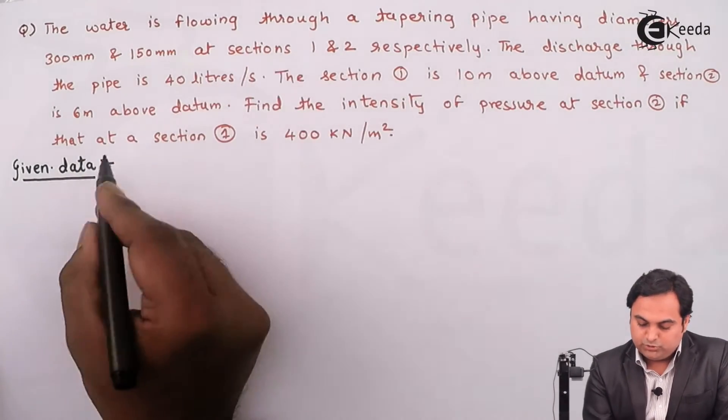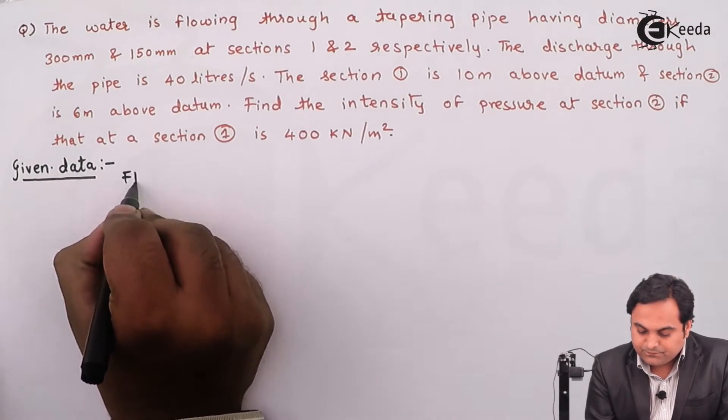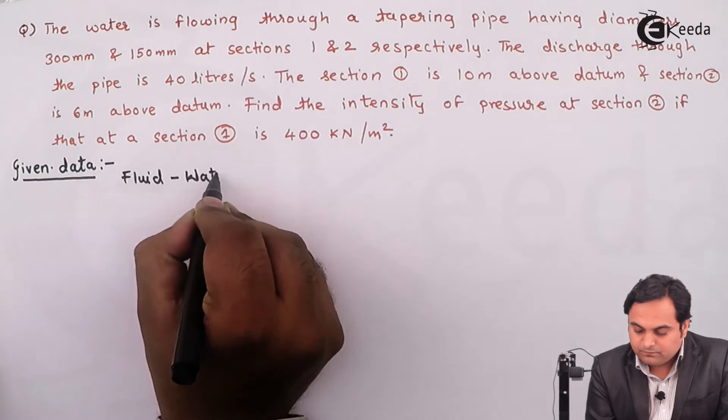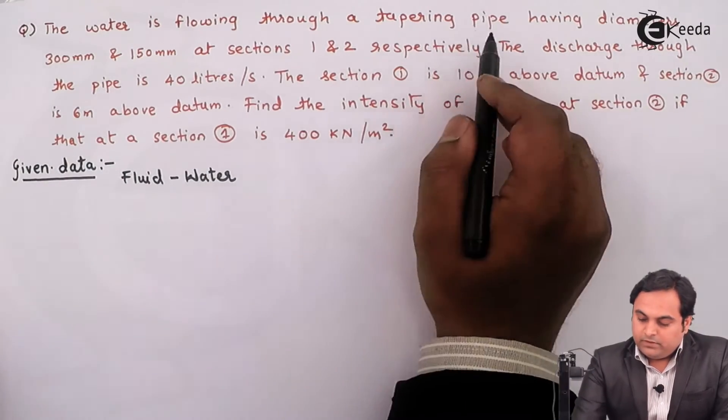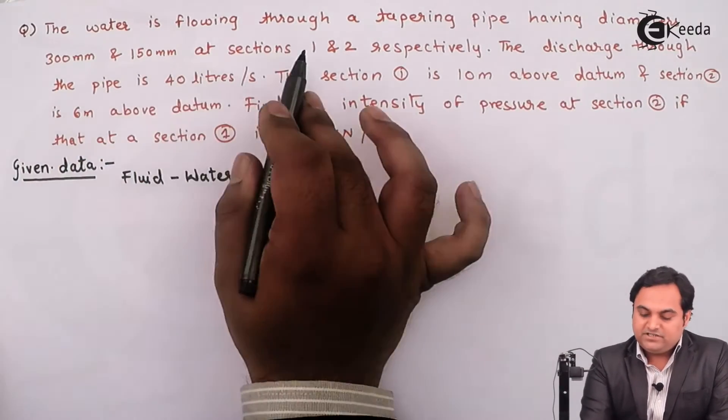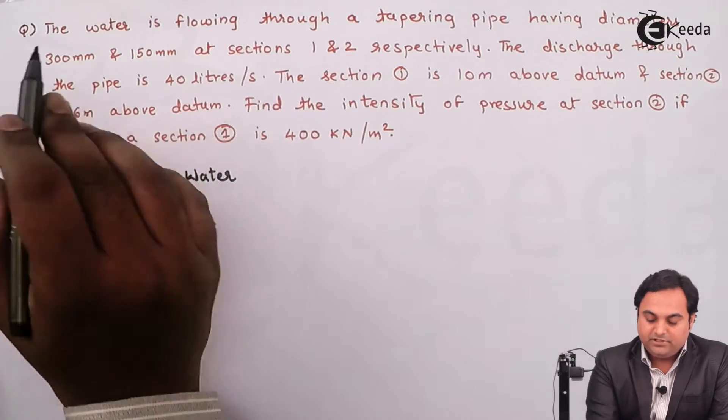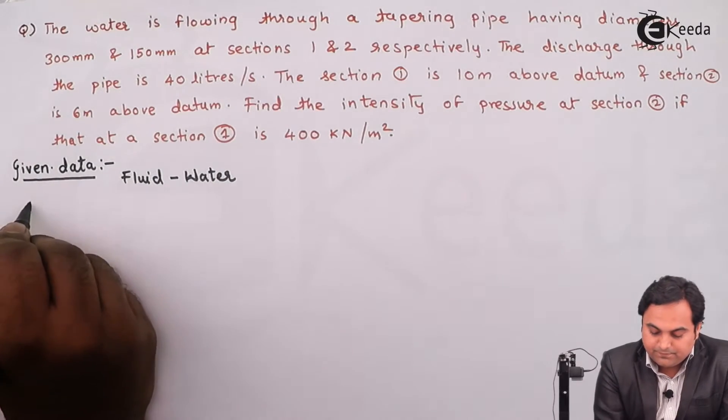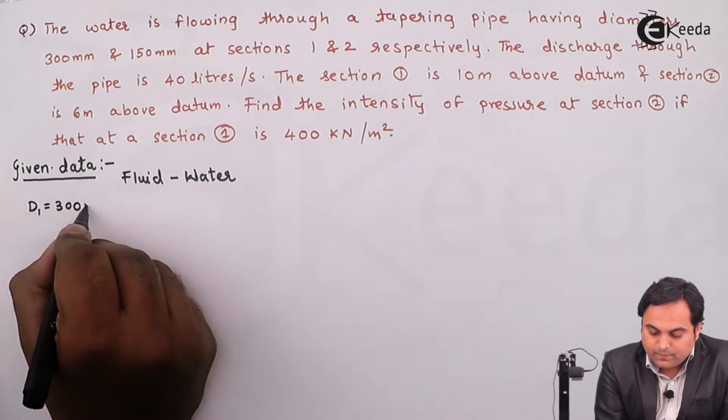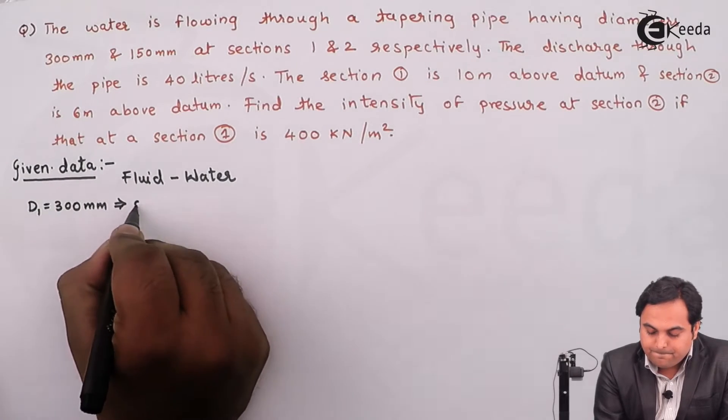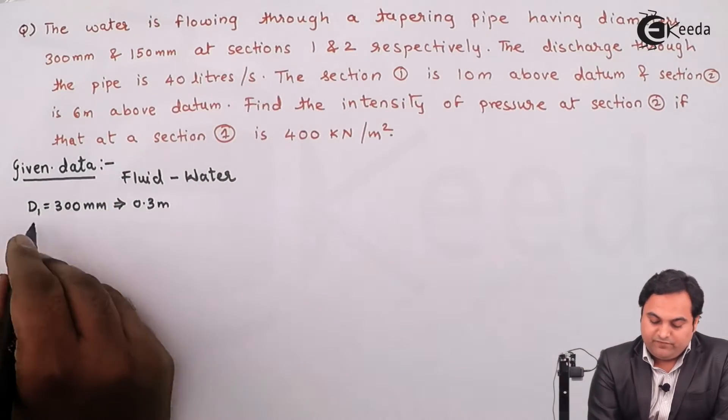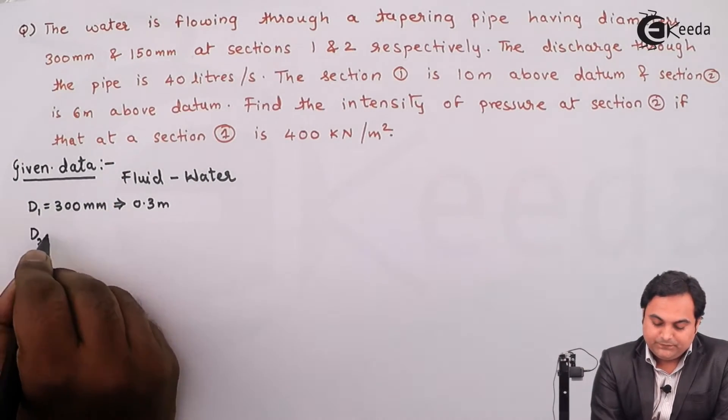Water is flowing, so the type of fluid given here is water, through a tapering pipe having diameters 300 mm and 150 mm at section 1 and section 2. So at section 1 the diameter d1 is 300 mm, and at section 2 the diameter d2 is 150 mm.